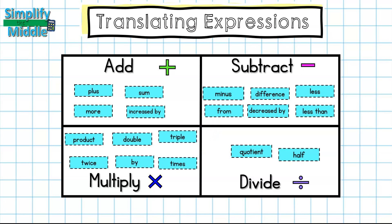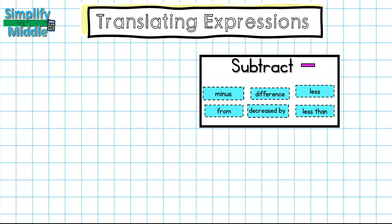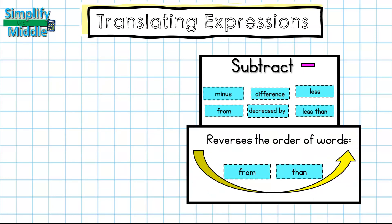What we're going to do is look a little more closely at the subtraction words. I noticed that they have the words less and less than. They look very similar but they both do mean subtraction. However, they mean them in a different way. So whenever I see the word from or than, I'm going to actually reverse the order of the words in the phrase. So if my variable came first, it'll be after the subtraction sign when I see the word than. If my number comes first, it'll be after. So I'm just going to reverse the order.